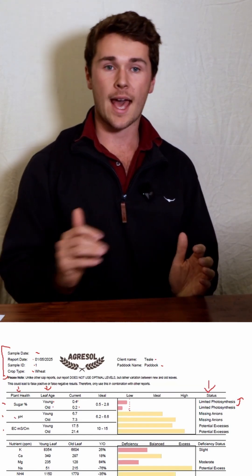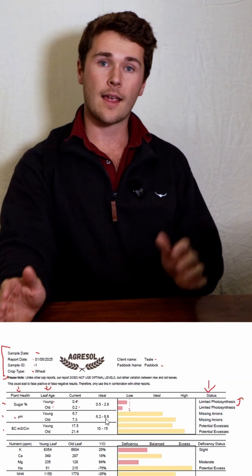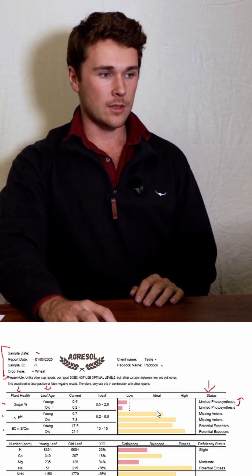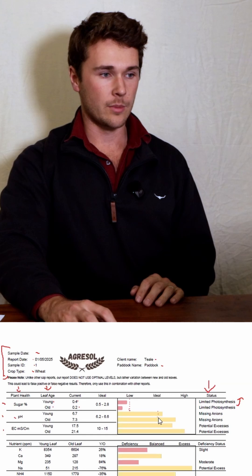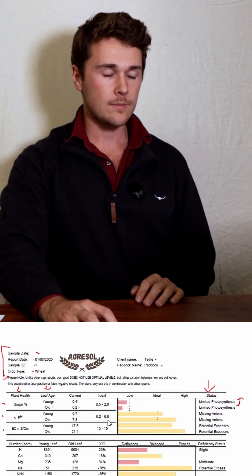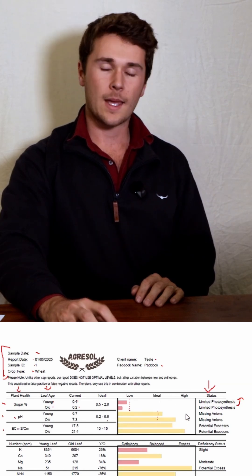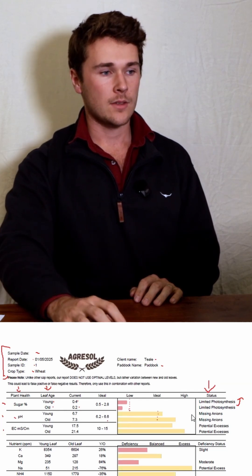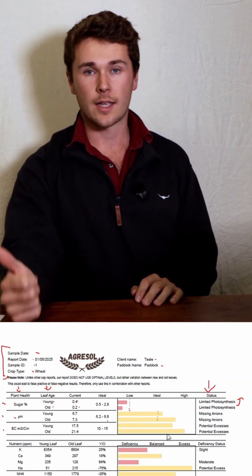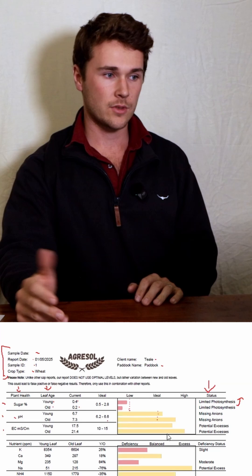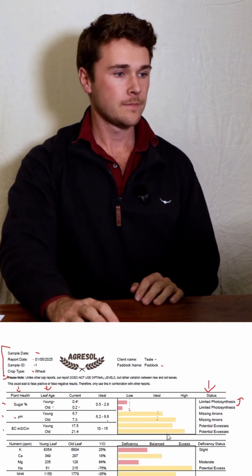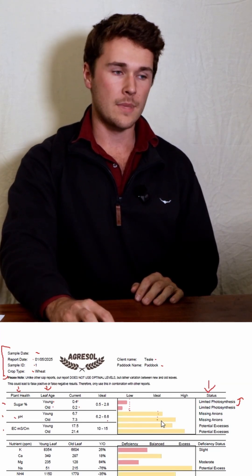pH is really interesting—it can tell you whether you're missing cations or anions, as well as potential pest and fungi pressure. Of course we have ideal levels on this test. It's a little bit high, past that range, suggesting we have missing anions such as nitrate, sulfur, boron, phosphorus, and chloride, which would lead to potential pest pressure.